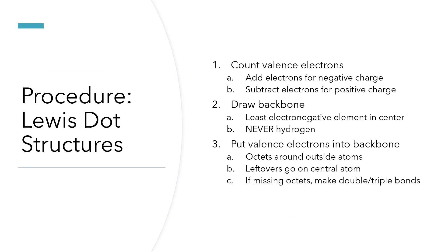Here is our basic procedure for drawing Lewis dot structures. Different textbooks teach this in different ways, and what I'm going to show you is what I find to be the most reliable, reproducible way. It's a process where you don't always get to the final structure first — you have to show your work along the way — but eventually you will get to the right structure. The first step is to count valence electrons: look at all the elements present, go to the periodic table, figure out how many valence electrons each has, and multiply by any subscript in the chemical formula.